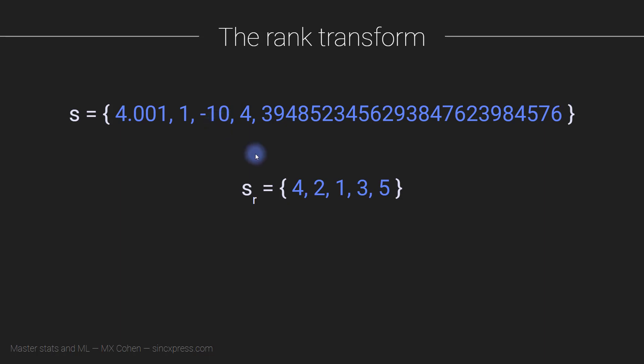And then the next number in this set, going towards the right on the real number line, would be 1, so it actually gets the number 2. So this really isn't the number 2—this is the position 2. It's the second smallest number. And then this is the third smallest number.